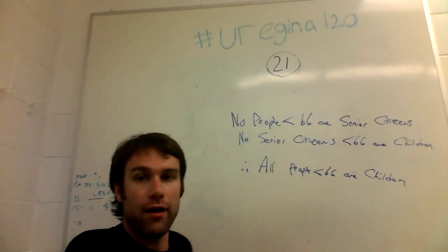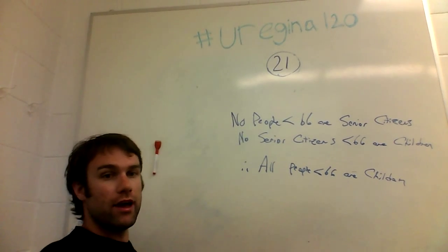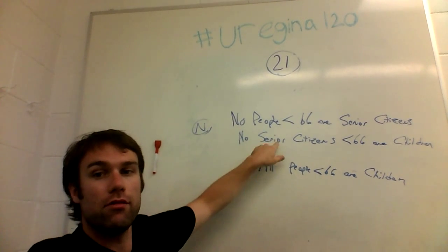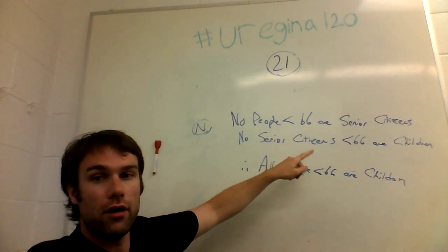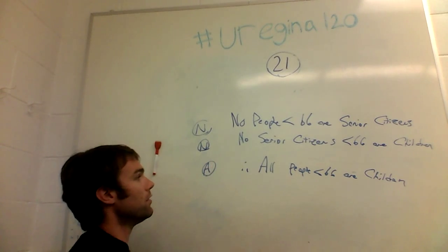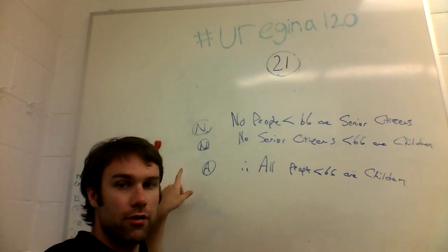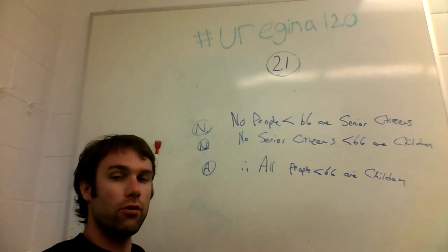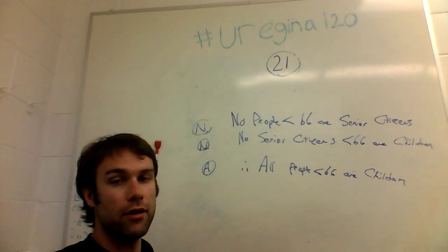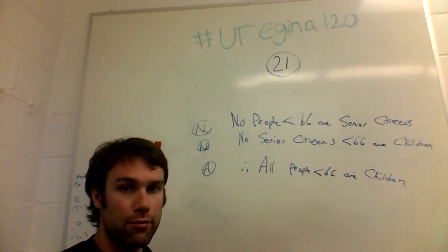Here's a clearer example: 'No people under the age of 66 are senior citizens' — which is a negative premise. 'No senior citizens under the age of 66 are children' — also a negative premise. And the conclusion: 'All people under the age of 66 are children' — which is an affirmative conclusion. So we have two negative premises, based on those 'no's, and an affirmative conclusion.